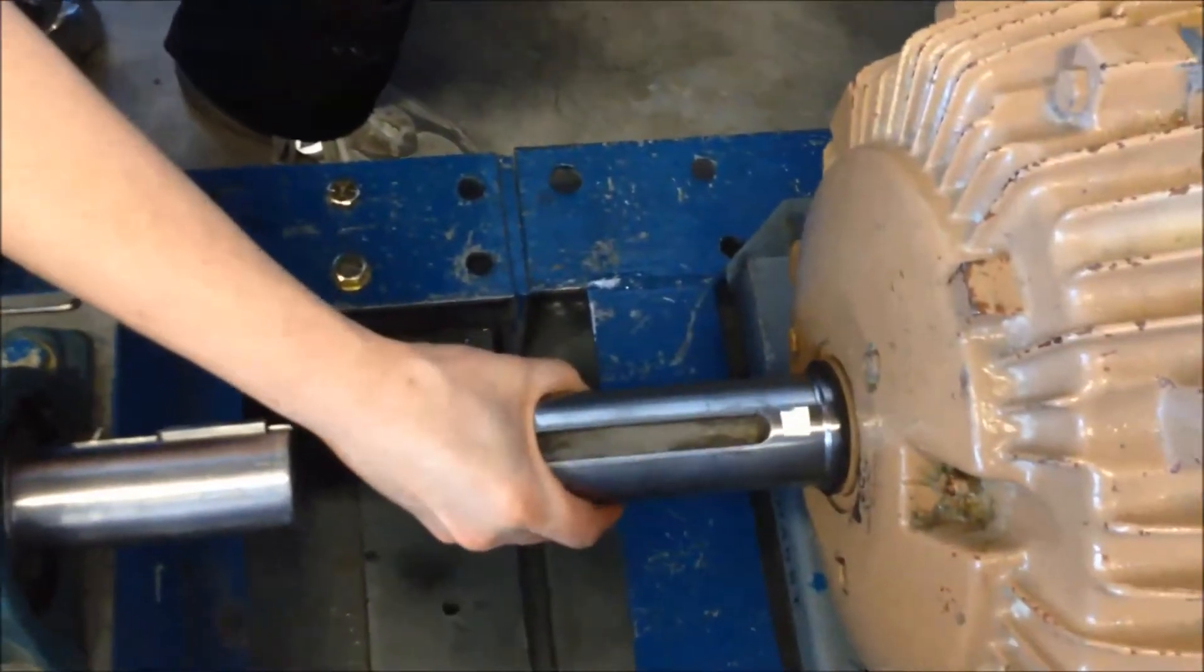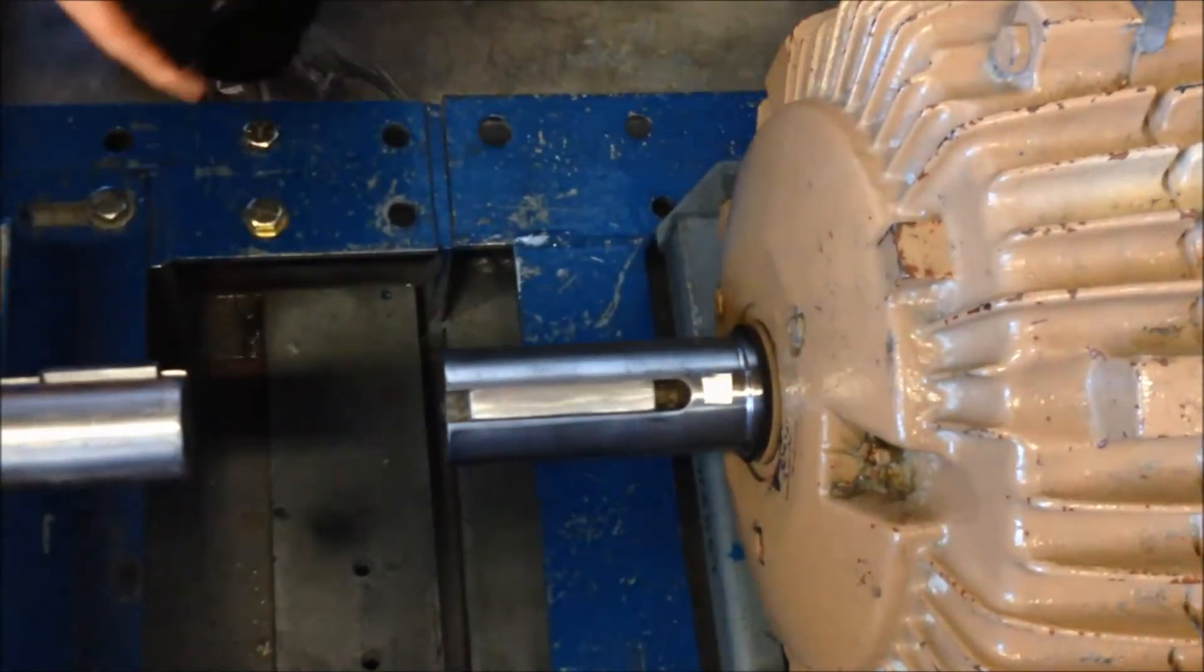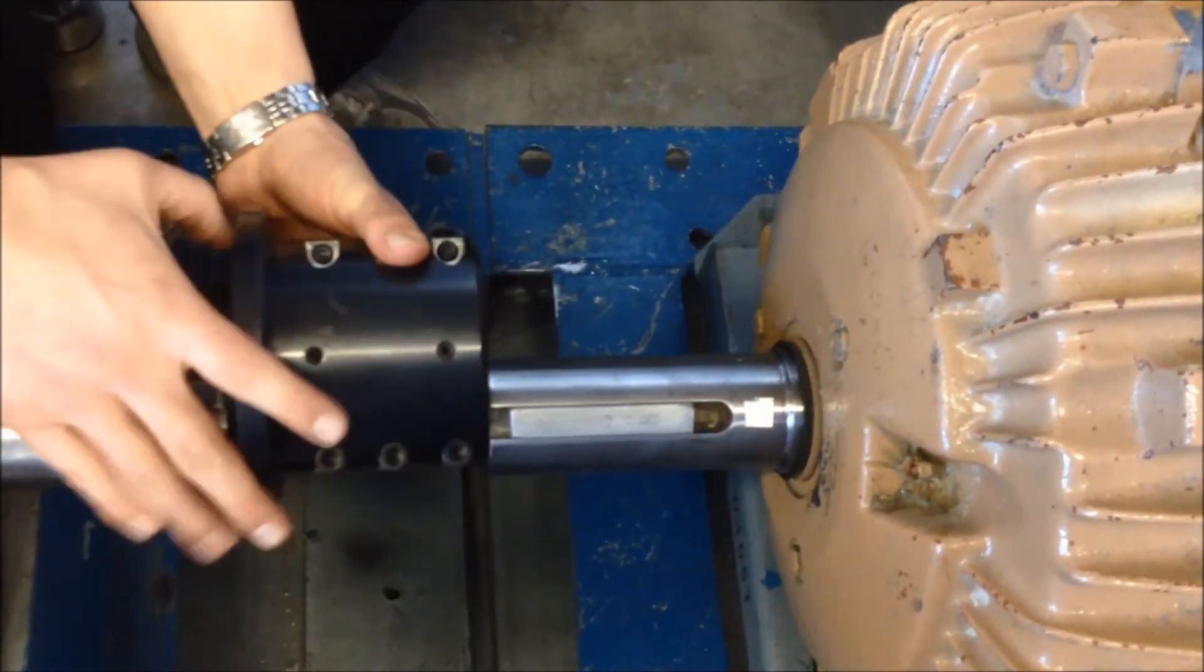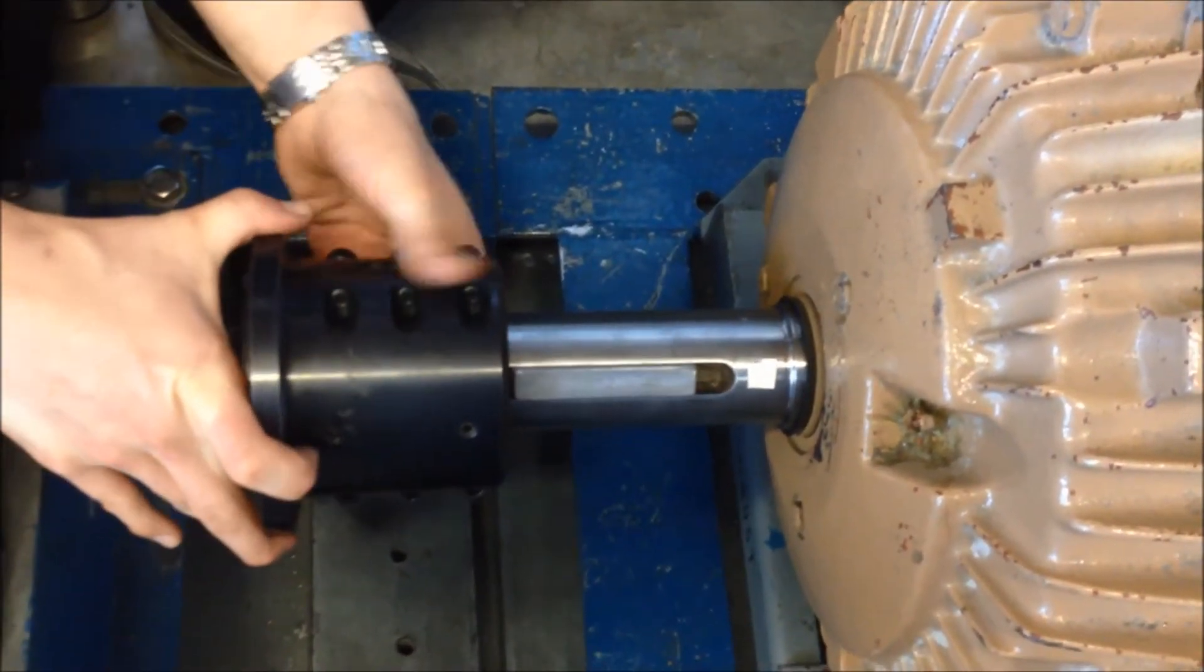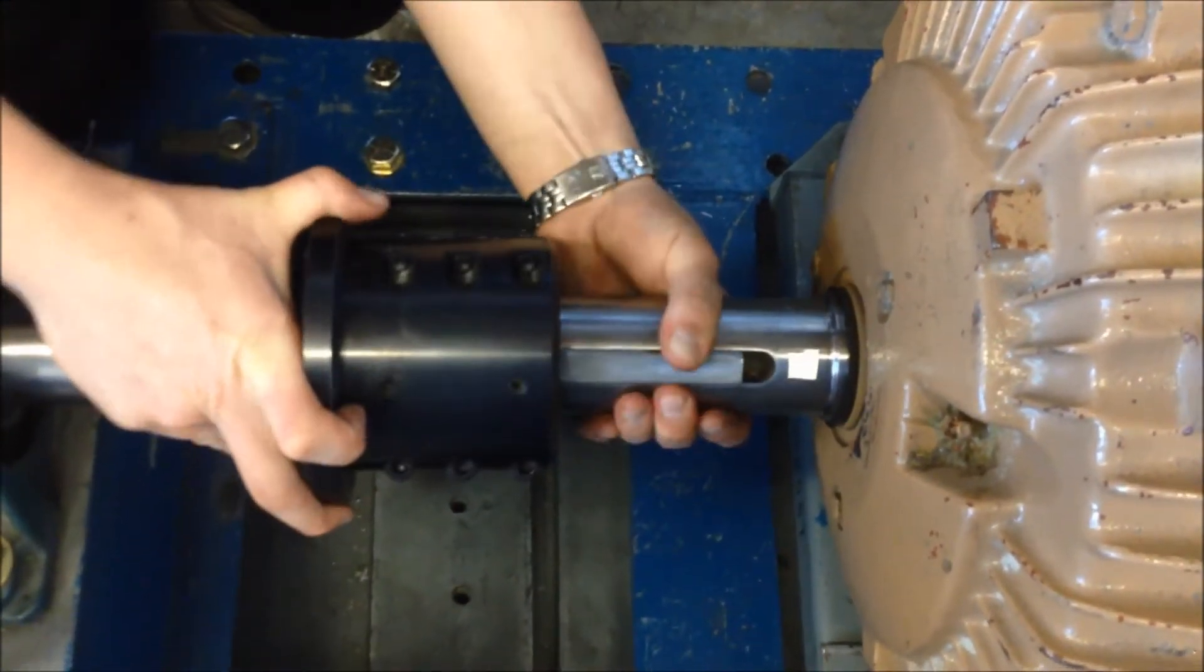Insert the motor key and slide the motor hub onto the motor shaft. If the hub does not slide freely, remove the hub and re-inspect the shaft and key for defects. Any defects on the shaft or key may prevent the hub from sliding on freely.